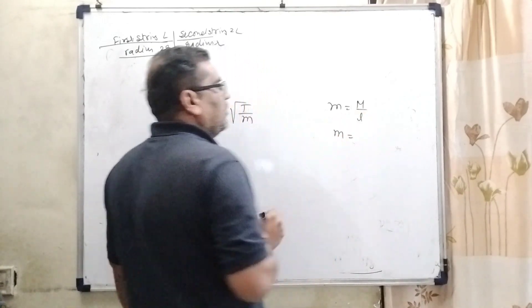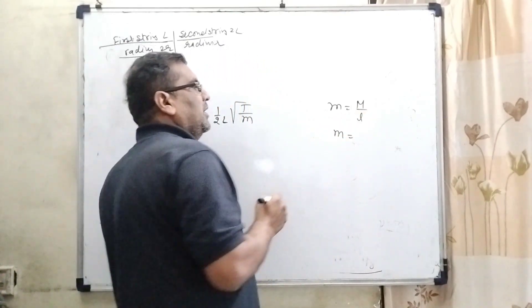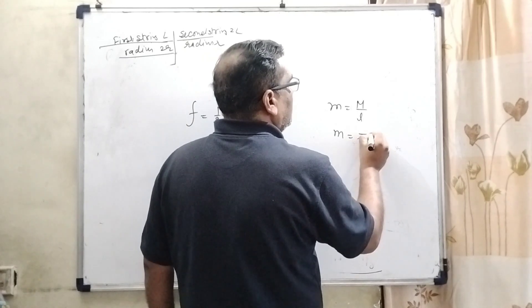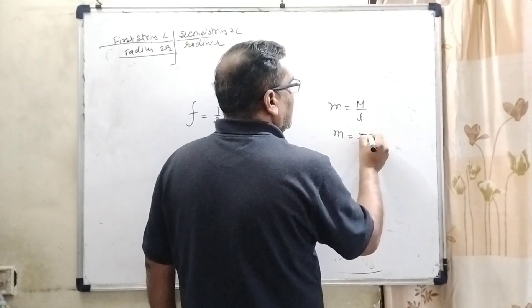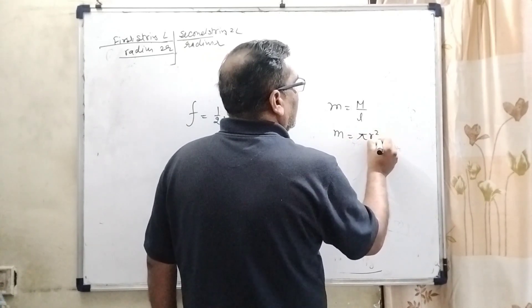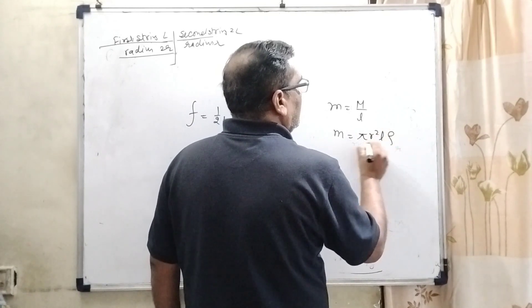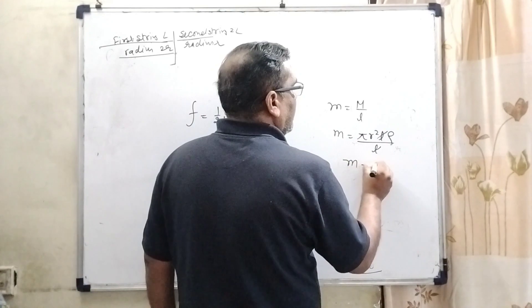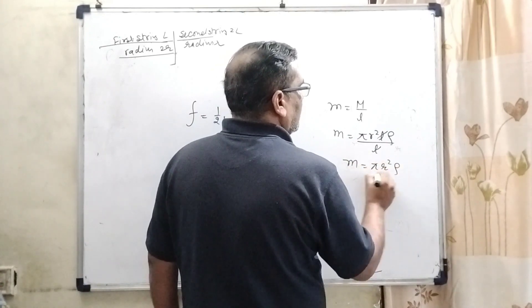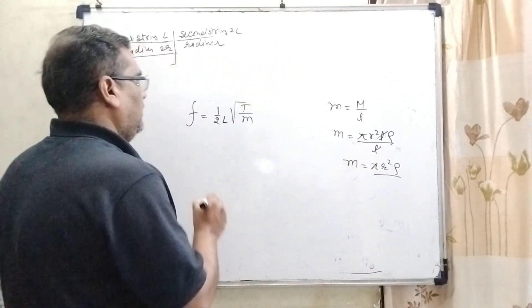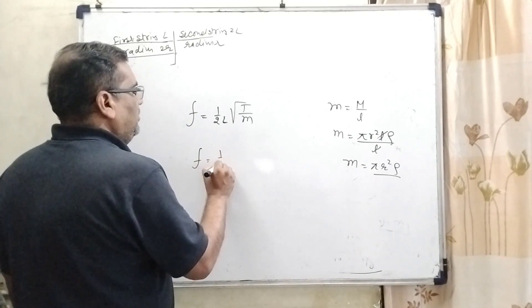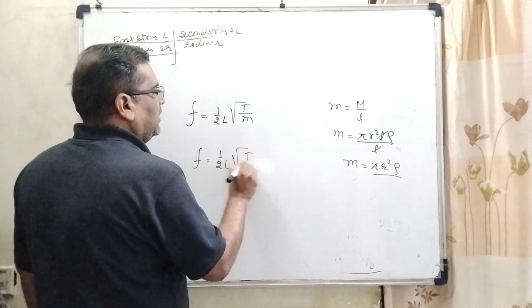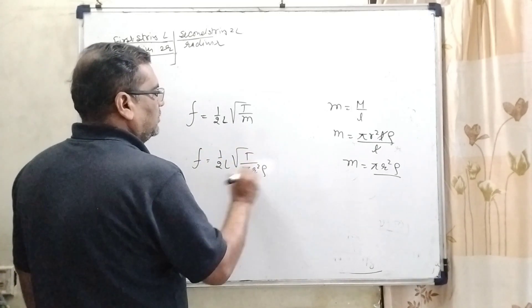So what is the formula of mass? Mass can be written as volume into density. Volume of the wire, here means cylinder pi R square and length L and density rho upon L. L, L cancel out. Then M can be written as pi R square rho. So in the place of M, we can put here pi R square rho.